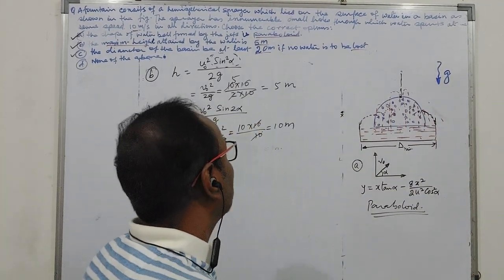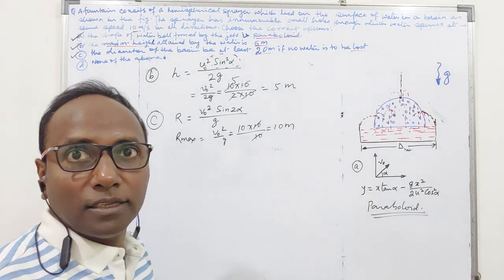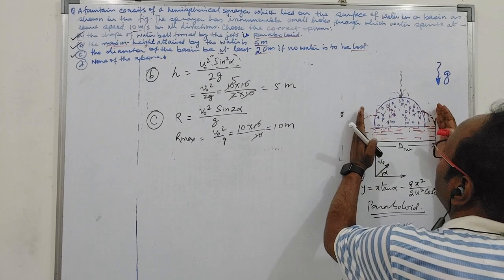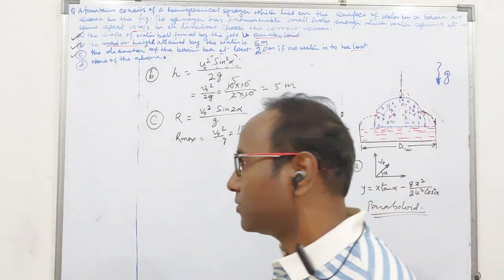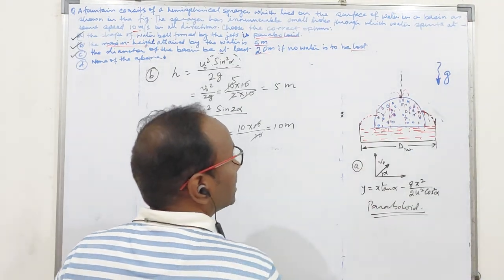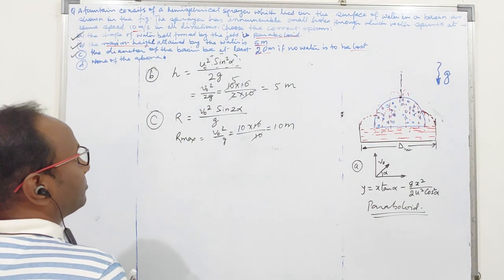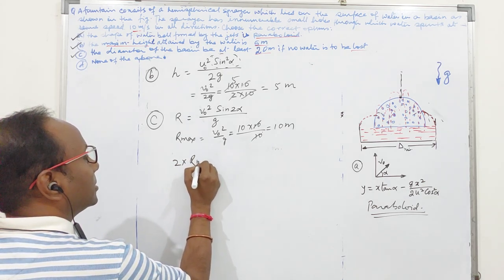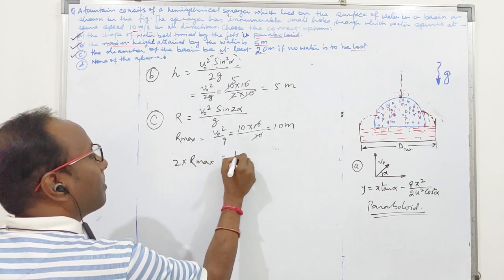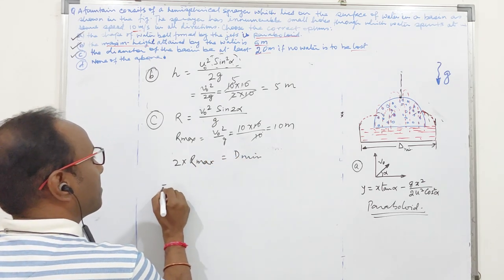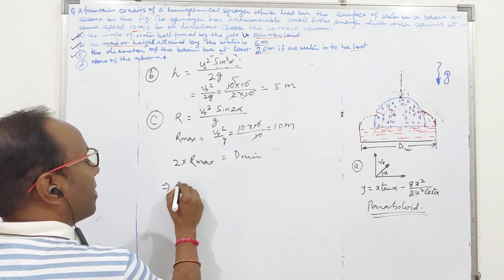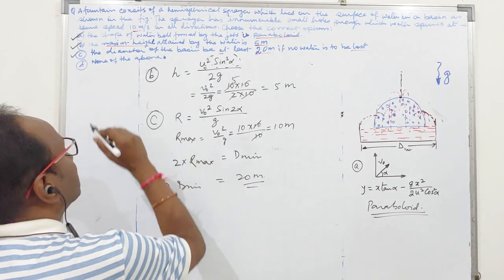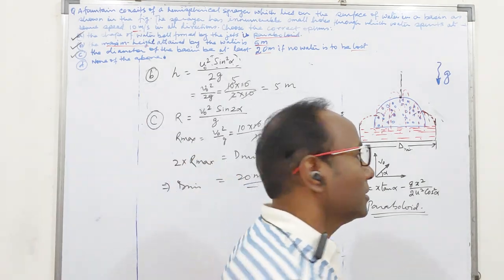Any spray which is having maximum range of 10 meter should fall within this basin boundary. So our diameter minimum of the basin should be two times our Rmax, that is 20 meter. So C also is correct.